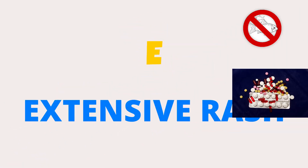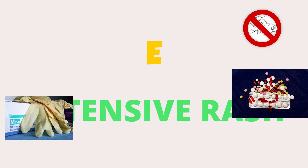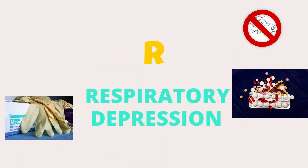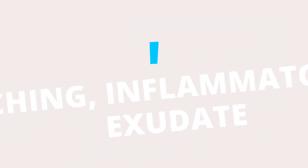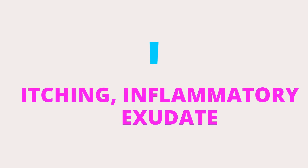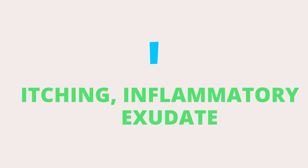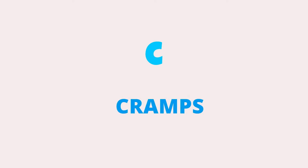E is for extensive rash, which can appear as hives, wheals and nettles that can be extremely itchy. R is for respiratory depression. G is for generalised flushing. I is for itching and inflammatory exudate. And finally, C is for bodily cramps, which can also occur during an anaphylactic reaction.